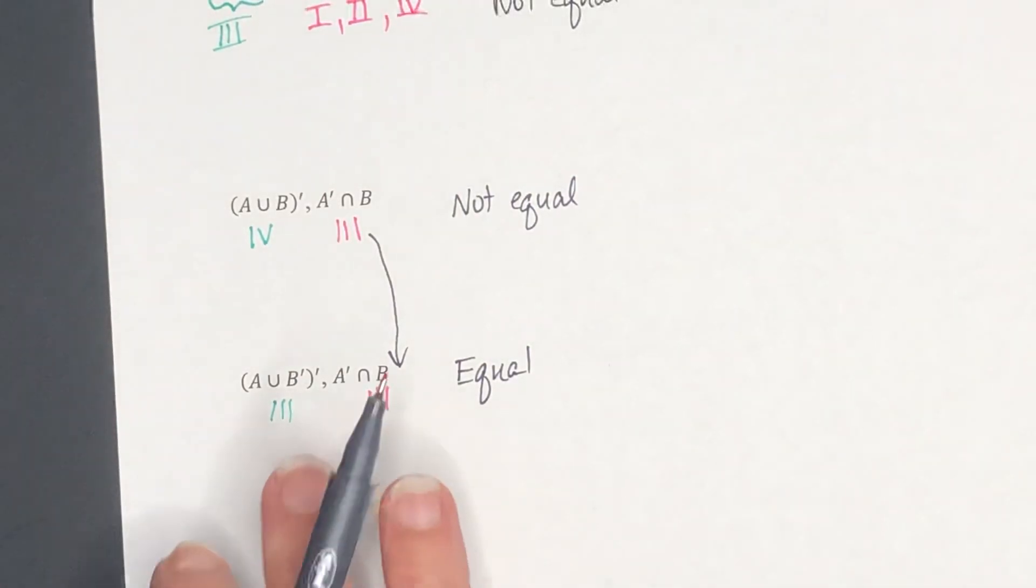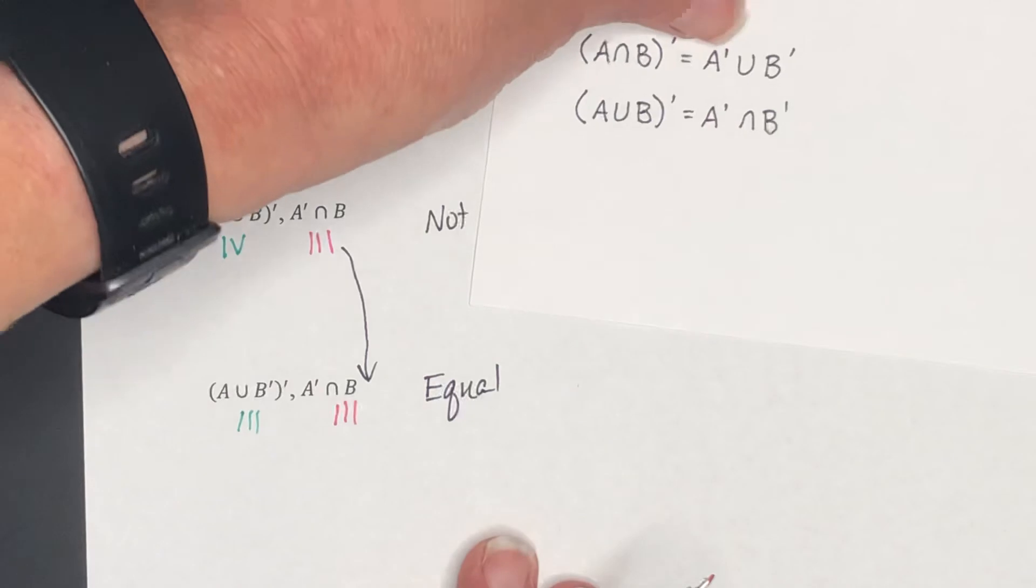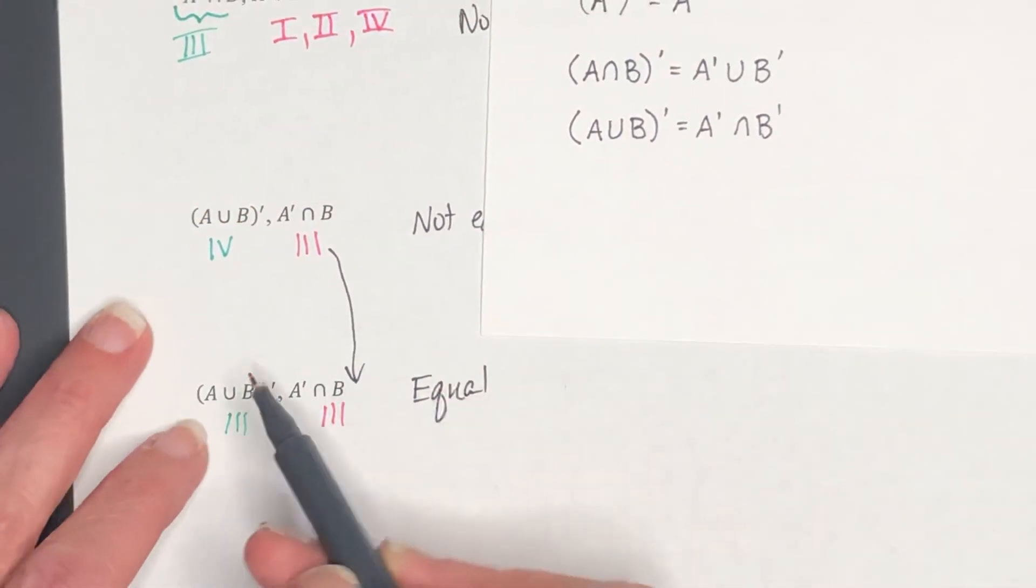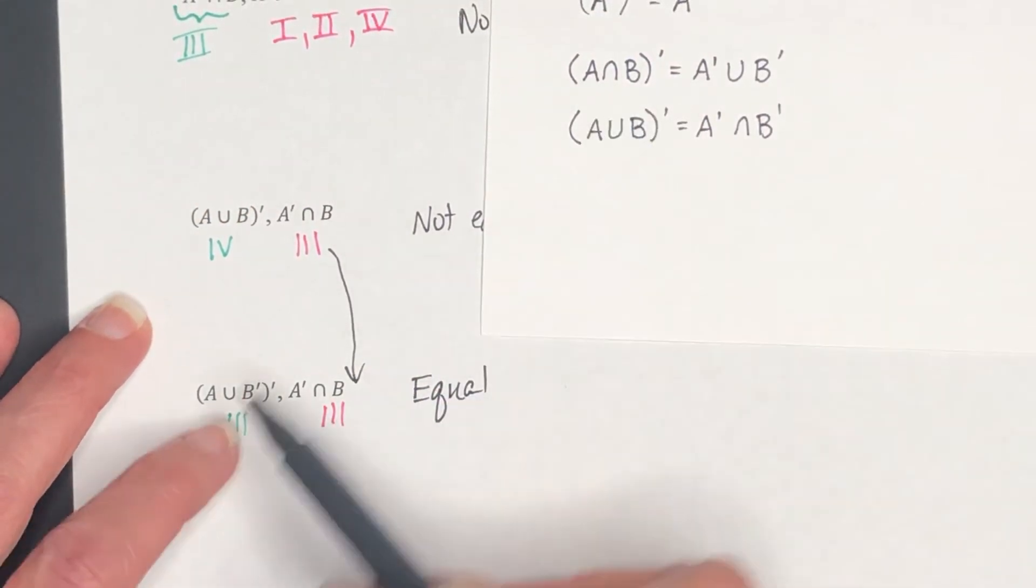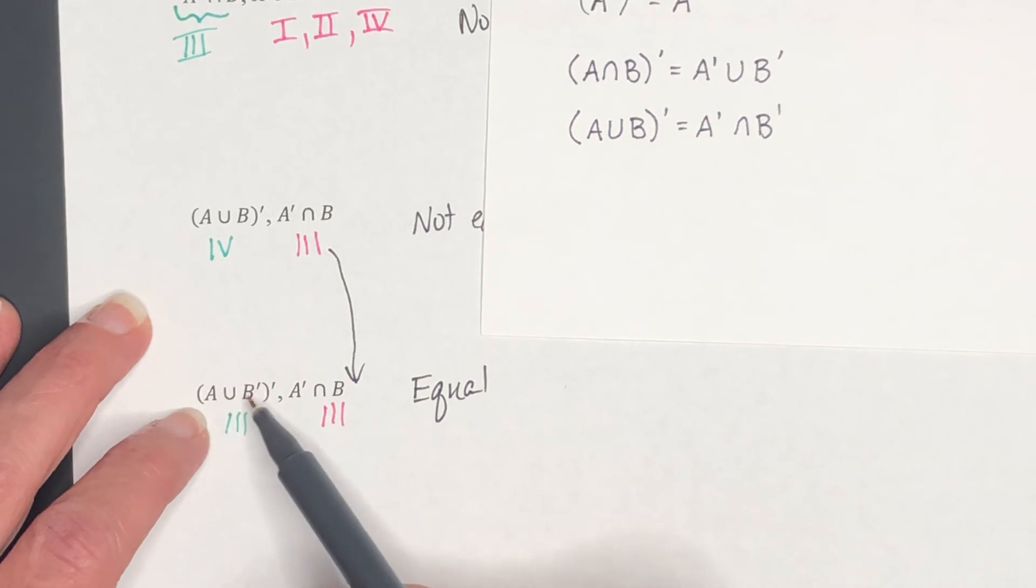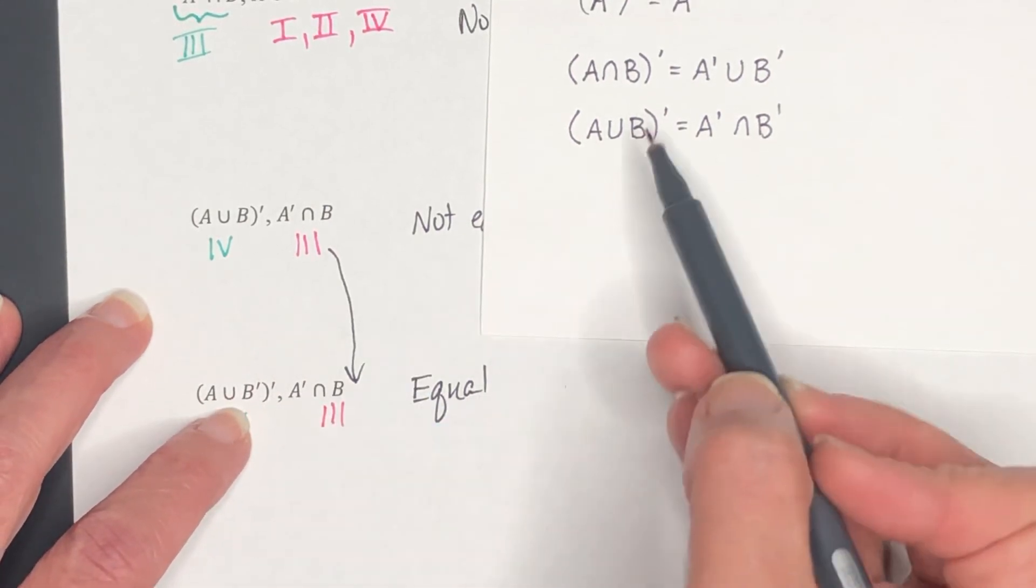What's more, you actually could have figured this out using the DeMorgan's rules that we talked about on the first page of this lesson. Here they are. I've recopied them. This says that, look right here, I have A union another set, two sets unioned with a complement on the outside. That's this case right here.